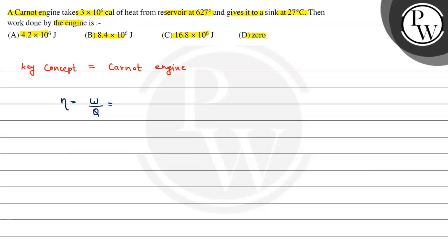This equals 1 - T2/T1. T1 is the higher temperature, so higher temperature is 627 degrees Celsius.